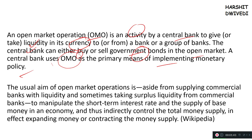Open market operations are one way of implementing the monetary policy of a central bank. The monetary policy of the USA is decided by the Federal Reserve, and that of India is decided by the Reserve Bank of India. These operations change the liquidity in the economy in order to manipulate the short-term interest rate — called the federal funds rate in the USA and the repo rate in India.